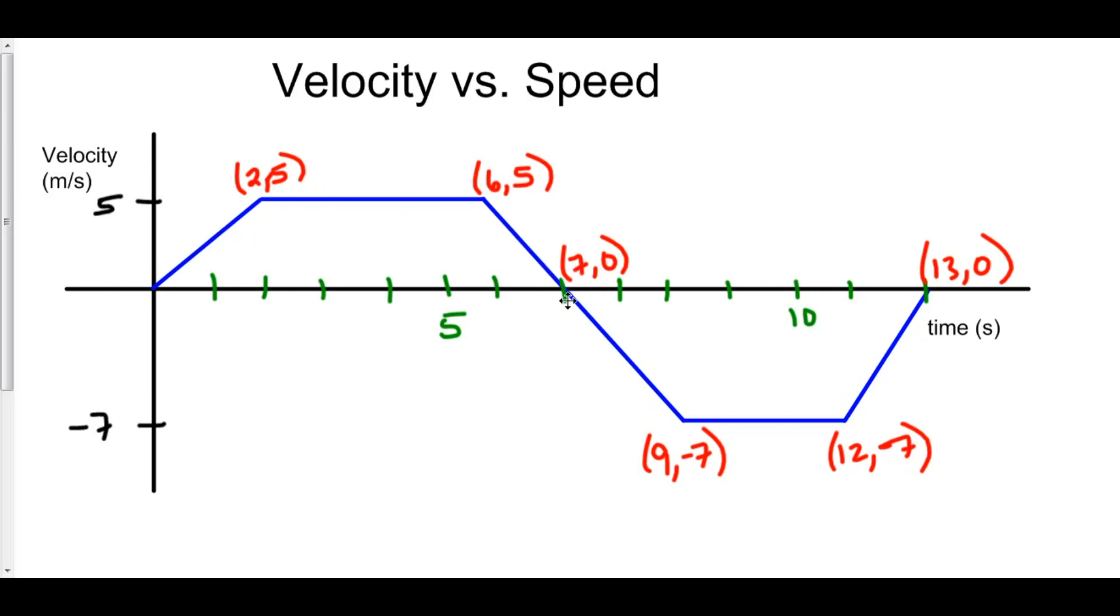And then we had zero velocity, so we stopped. And then when our velocity became negative, we started moving in the opposite direction, in the negative direction. That's what a negative velocity means.